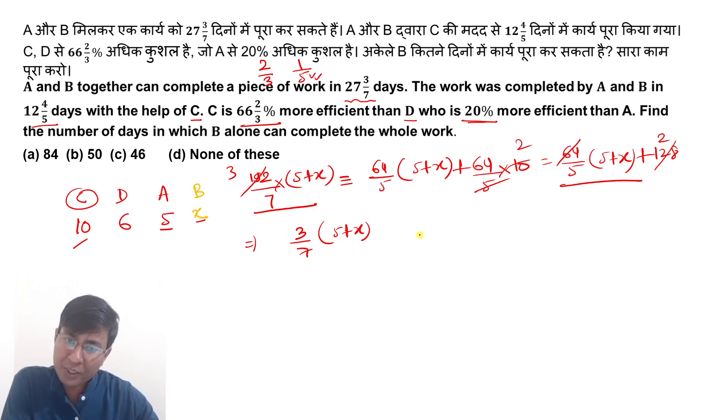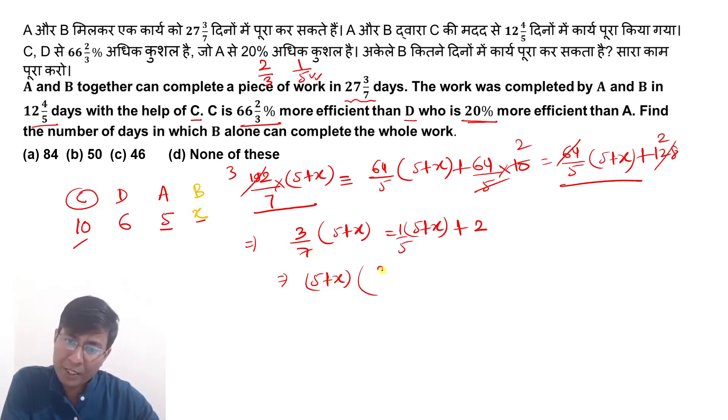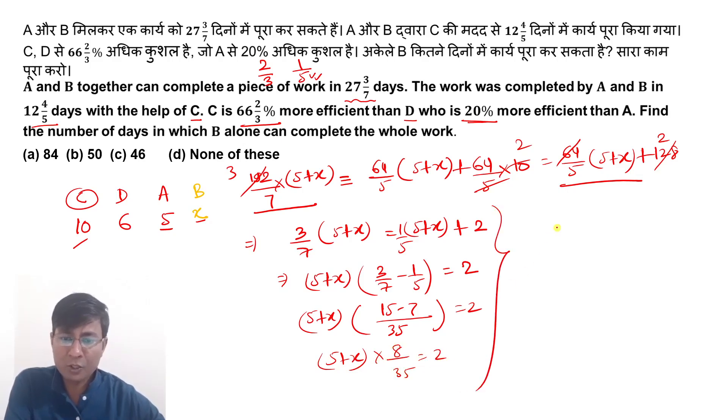5 plus x is equal to... you'll get 1 by 5 here. 64 is here, divide in numerator to cancel, denominator has 5. Take 5 plus x common on left hand side: 5 plus x into 3 by 7 minus 1 upon 5 equals 2. So ultimately 5 plus x into 35, 15 minus 7 equals 2. So 5 plus x into 8 by 35 equals 2. From here, 5 plus x equals 35 into 2 divided by 8, two into four.